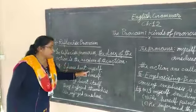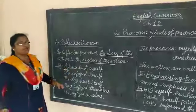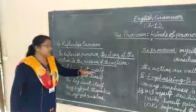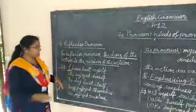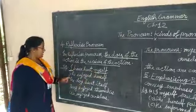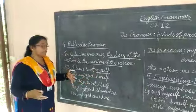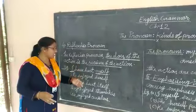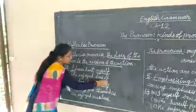I have heard myself. I am performing the action and also receiving it — I have heard myself. I and myself. Next, she enjoyed herself. She is performing the action and she is also receiving the action — enjoying herself. So here, herself.